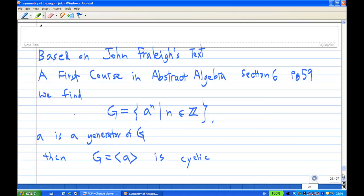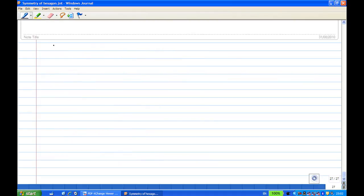From First Course in Abstract Algebra, section 6, page 59, we find that suppose G is equal to a to the power n for n belonging to the integers. Then a is a generator for G, and G is generated by a. It is cyclic. The size of G is 12. There are 6 rotations, 6 reflections.